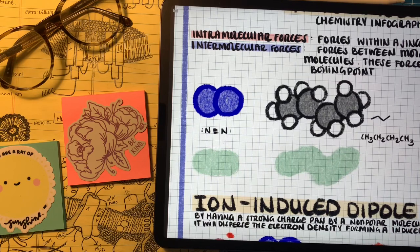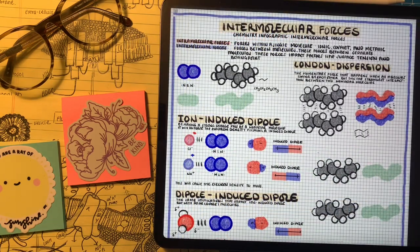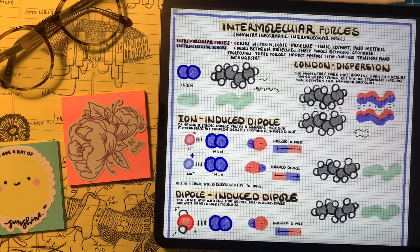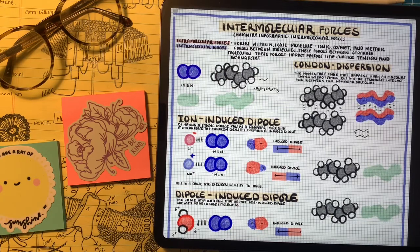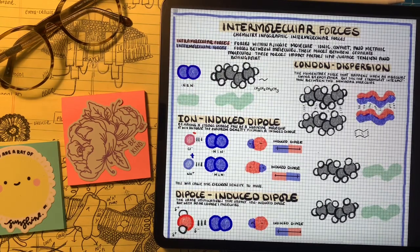When we talk about the next forms of intermolecular forces, it involves changing that even distribution of electron density. The next two examples — ion-induced dipole and dipole-induced dipole — are pretty similar, so we'll group them together. A non-polar molecule has evenly distributed electron density, but if a charge passes by it, it forces the electrons in one direction, like magnets. If a negative ion passes by, it pushes the electron density to the other end, forcing a dipole in that molecule as long as the ion is present. An ion-induced dipole is slightly stronger than a dipole-induced dipole, since an ion has a permanent, stronger charge than a partial charge from a dipole.